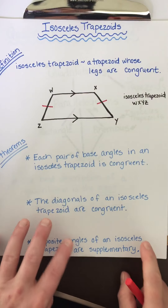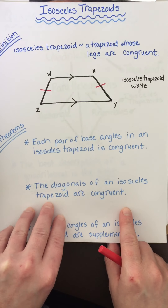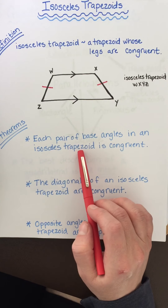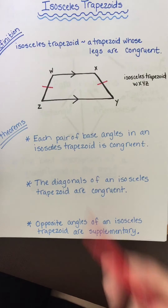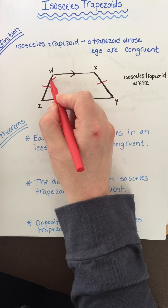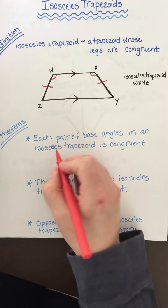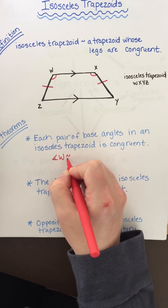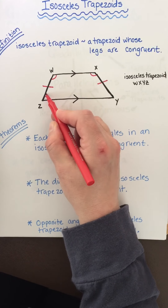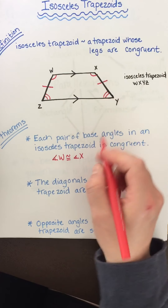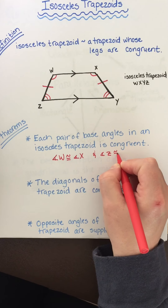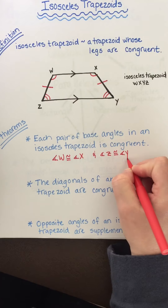We've got some theorems that go with these. The first theorem says each pair of base angles in an isosceles trapezoid is congruent. So here's one of my bases: angle W is congruent to angle X. And then here's my other base, so angle Z is congruent to angle Y.